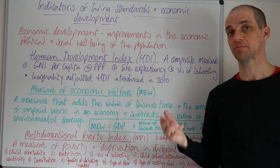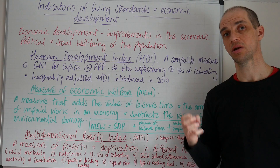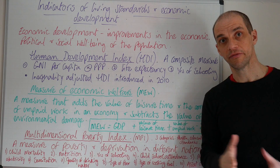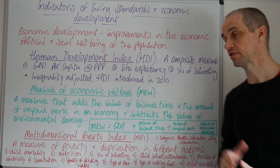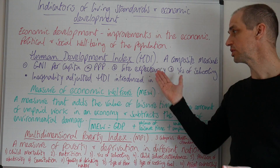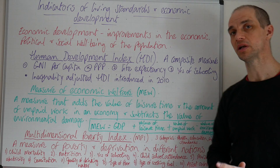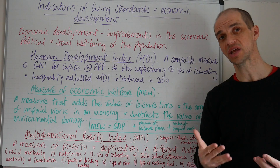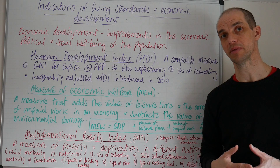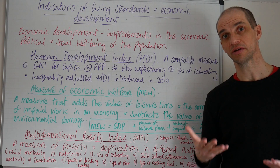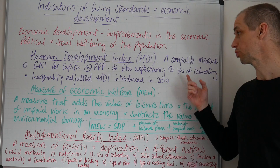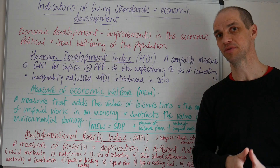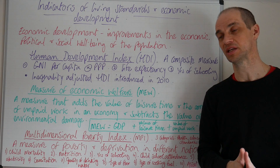Number two is life expectancy. Life expectancy is obviously far more straightforward to actually quantify, so that's not too challenging. And then finally, the years of schooling. This can be more difficult to actually measure, and of course the authorities may actually have an incentive to manipulate some of these figures.